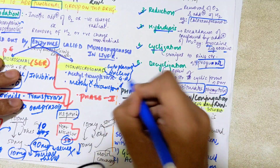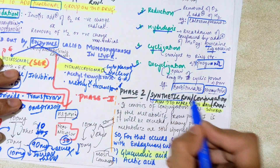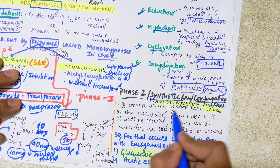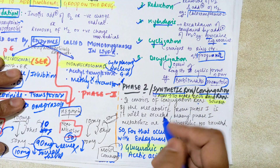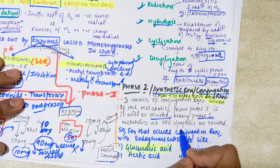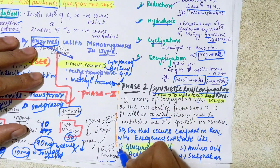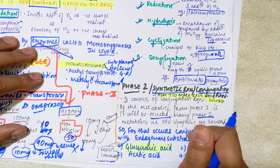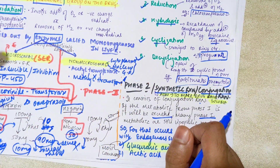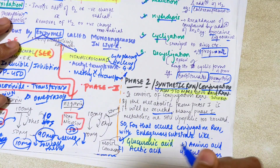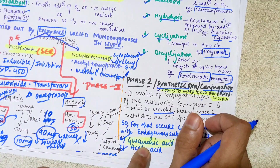Now for phase two. If the drug is not fully metabolized in phase one, it proceeds to phase two — a synthetic reaction, also called a conjugation reaction. The aim is to make the drug water-soluble. Many phase one metabolites are still lipophilic and cannot be excreted, so they must pass through phase two. Reactions in phase two include glucuronidation by glucuronide transferase — performed by microsomal enzymes — and amino acid conjugation.